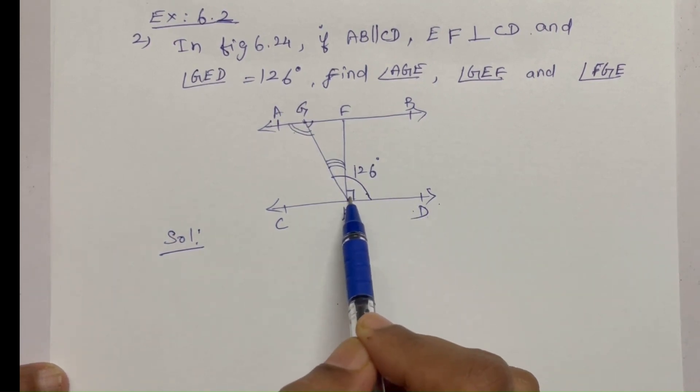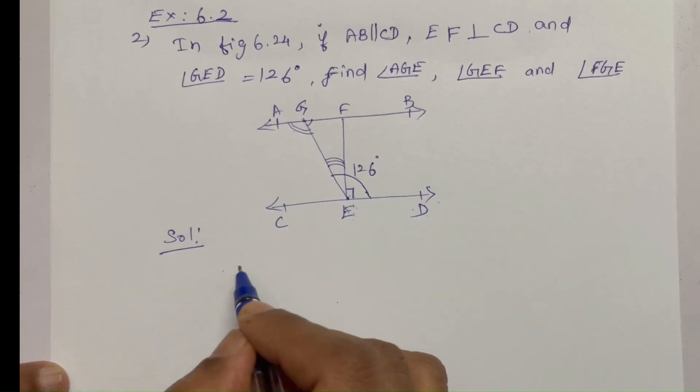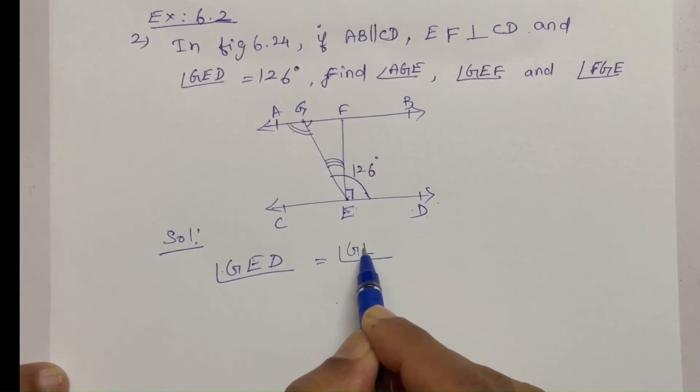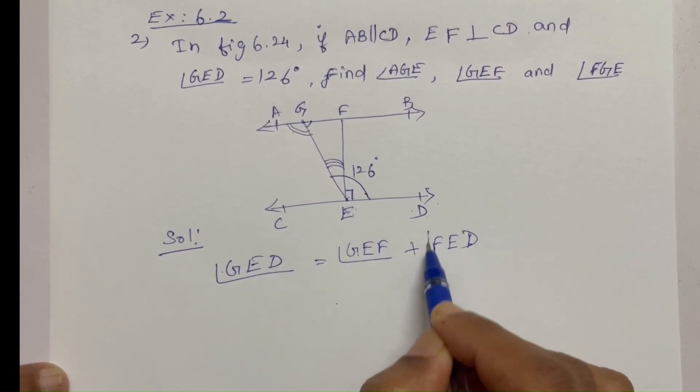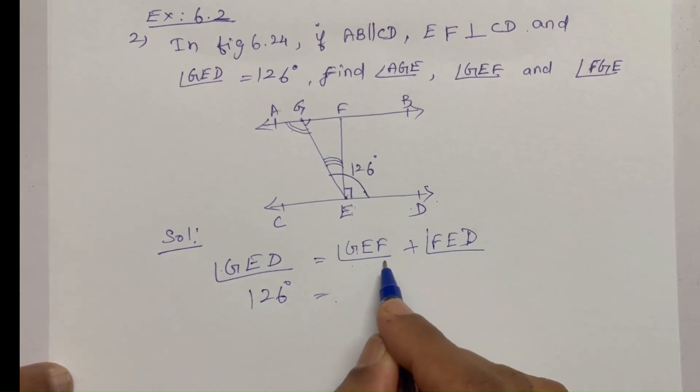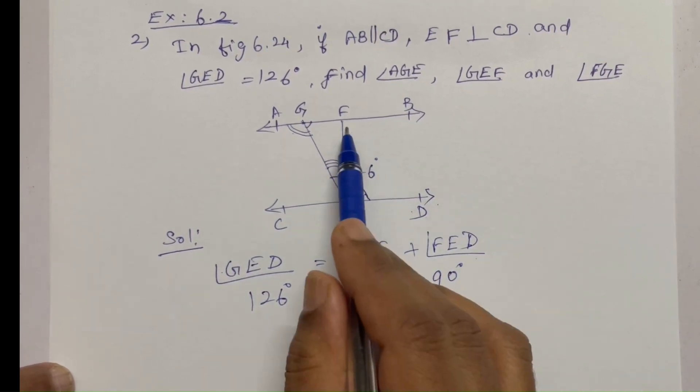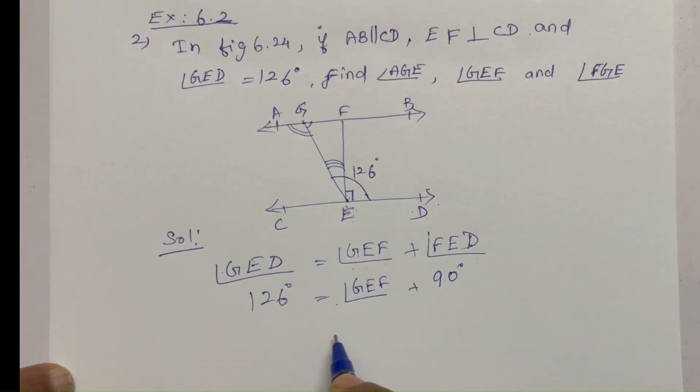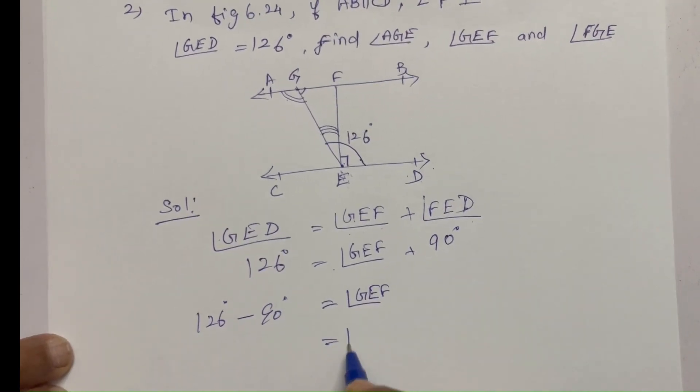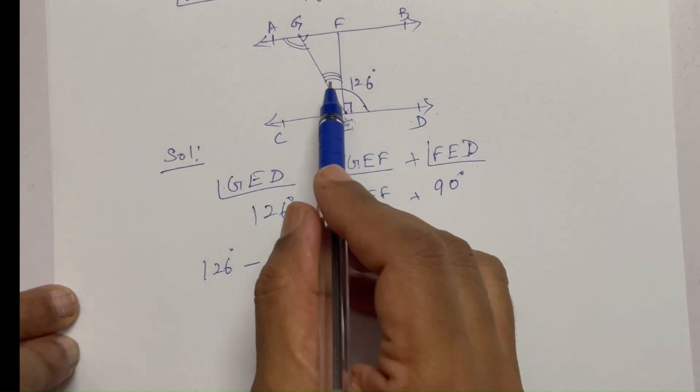Angle GED equals the sum of these two angles: angle GEF plus angle FED. GED is 126 degrees as given in the question. FED is 90 degrees because EF is perpendicular to CD, as given in the question. Therefore, angle GEF equals 126 degrees minus 90 degrees, equal to 36 degrees. This angle is 36 degrees.